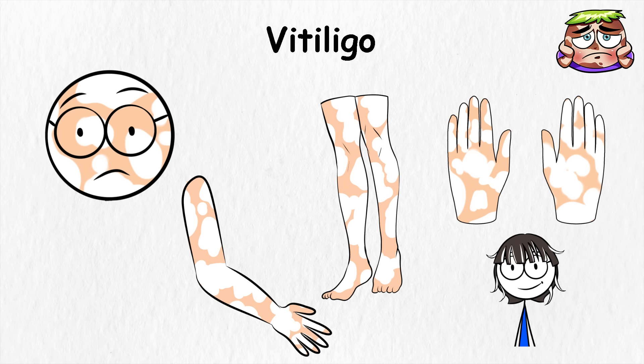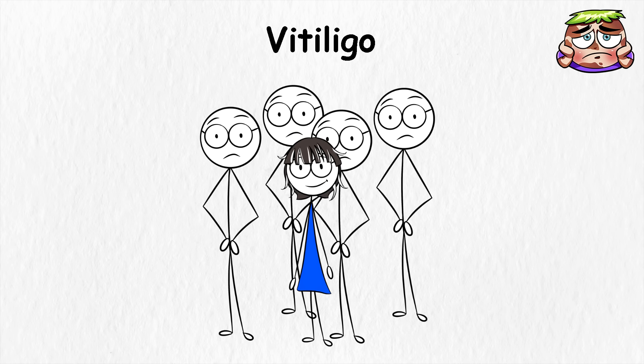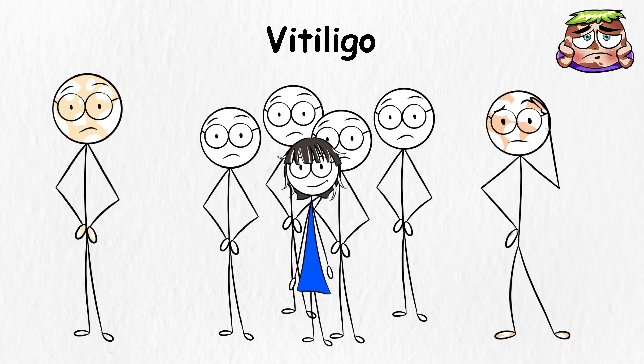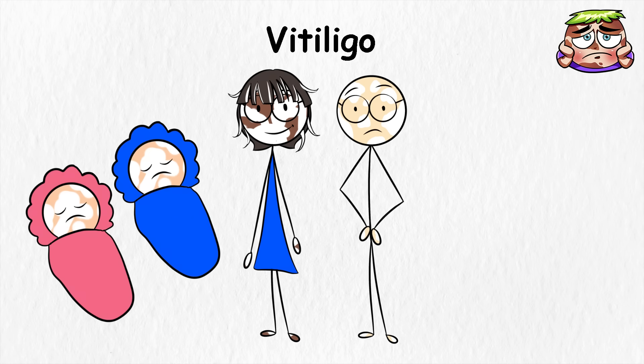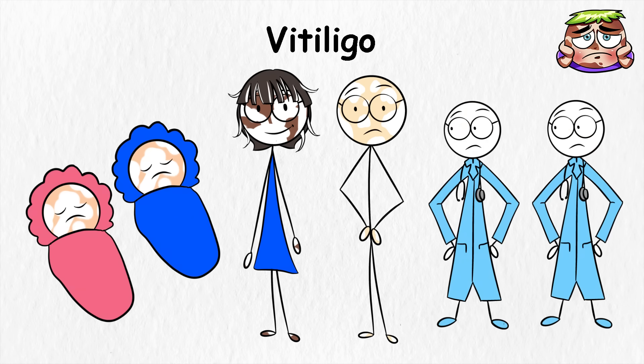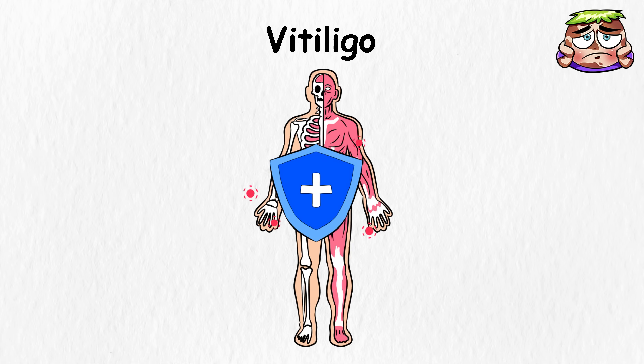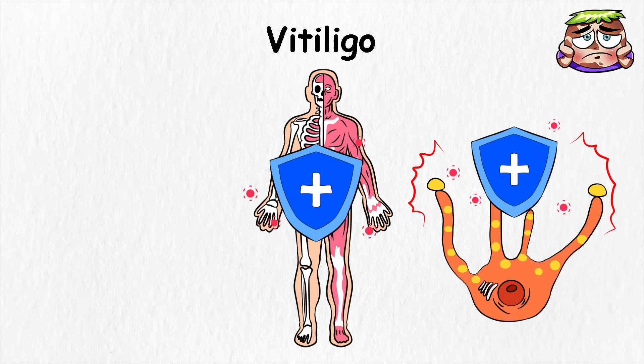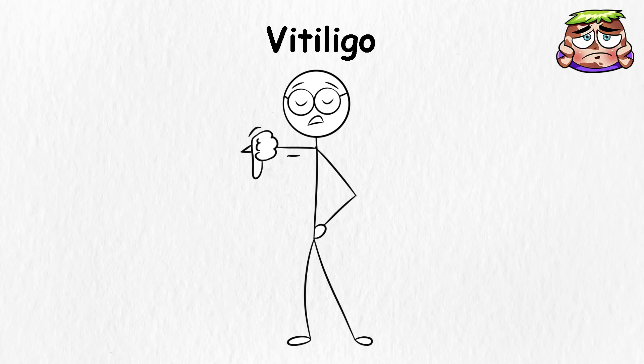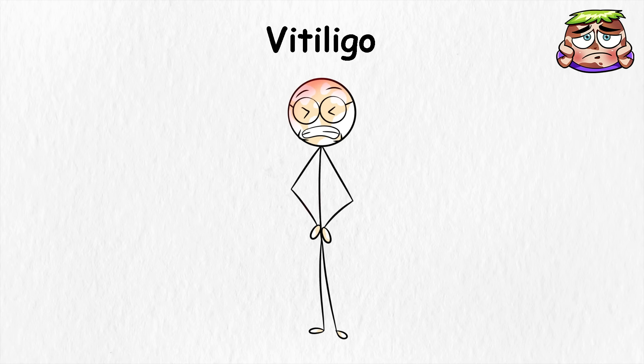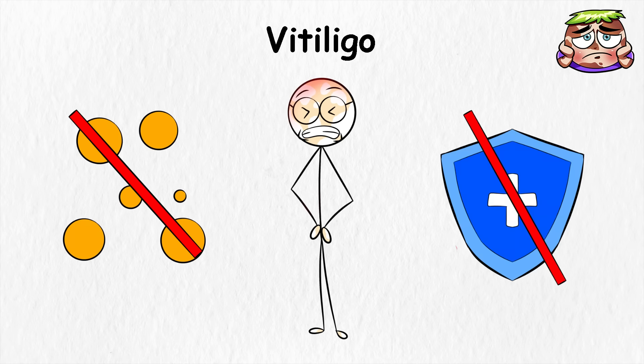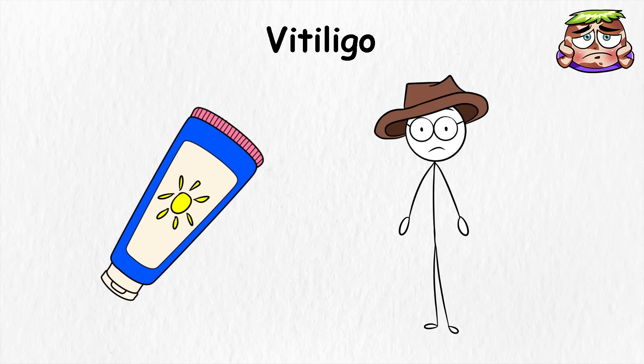Vitiligo is more common than many people realize. Roughly 1 out of every 100 people worldwide has it. For some, the spots spread quickly. For others, they stay the same for years. It looks different on every person, and it can show up at almost any age. But doctors think it happens because the immune system gets mixed up. Instead of defending the body, it attacks the pigment cells by mistake. That's why the patches form. It's not contagious, and it doesn't make you sick, but those lighter areas burn much faster in the sun. Without melanin, there's no shield, so sunscreen and hats become part of daily life.